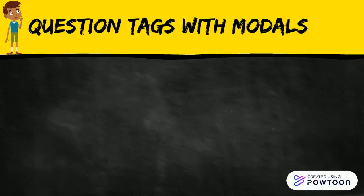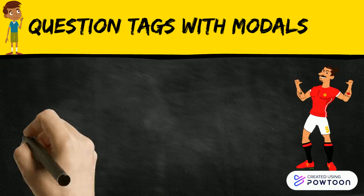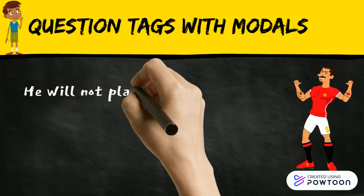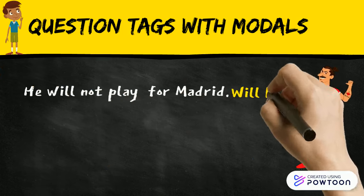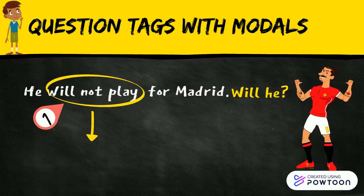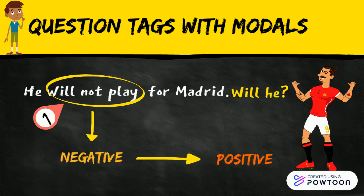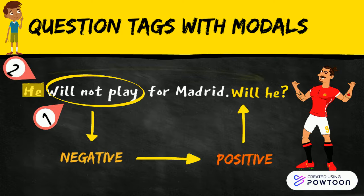But if the modal auxiliary is in the negative form, you change it into the positive form and then add the subject pronoun. Just like in this example: 'He will not play for Madrid, will he?'